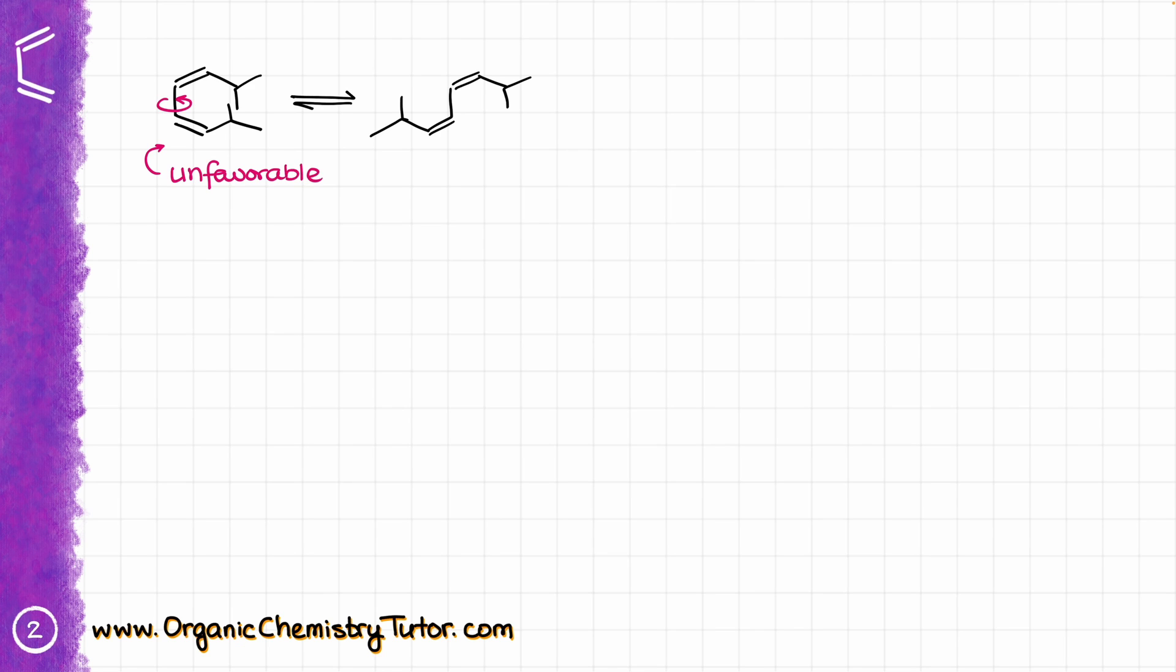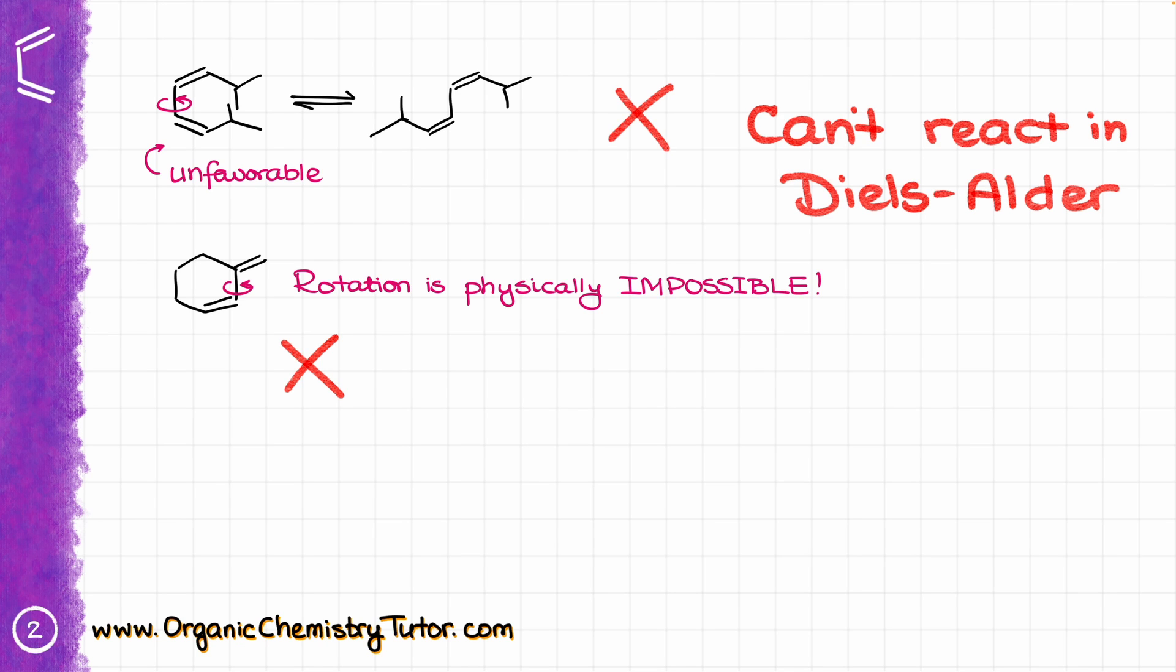Here is another example. Here, the rotation around the single bond that we have between our double bonds is physically impossible, because if we wanted to rotate this molecule and convert our diene from the s-trans conformation that it currently is in into the s-cis conformation, we would have to physically break our ring. And of course, we cannot do it by simply rotating the bonds. Which means that neither of these molecules will be able to effectively react in the Diels-Alder reaction, because they physically cannot assume the conformation that is required for that reaction.